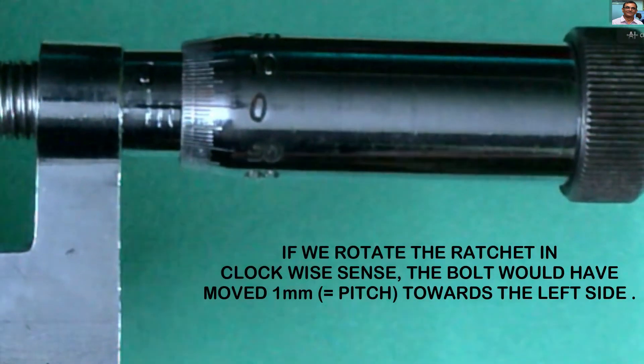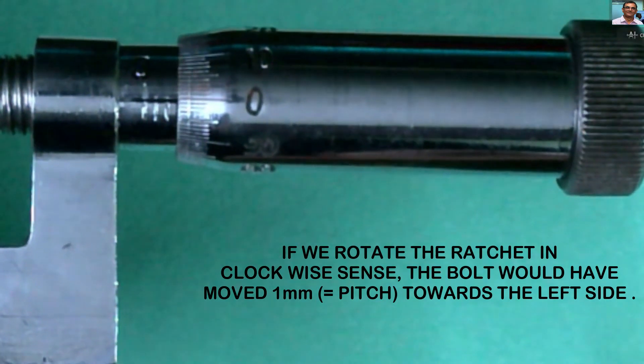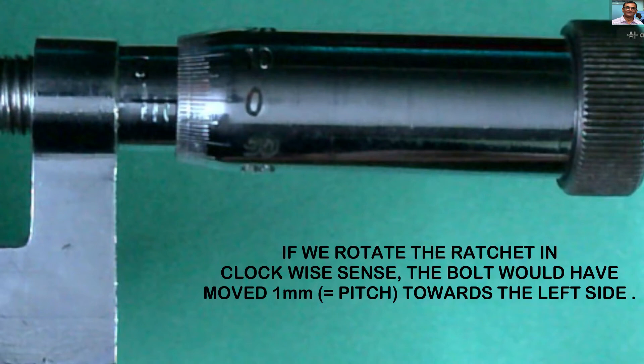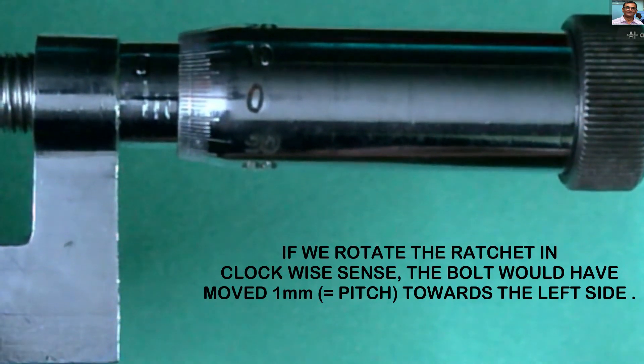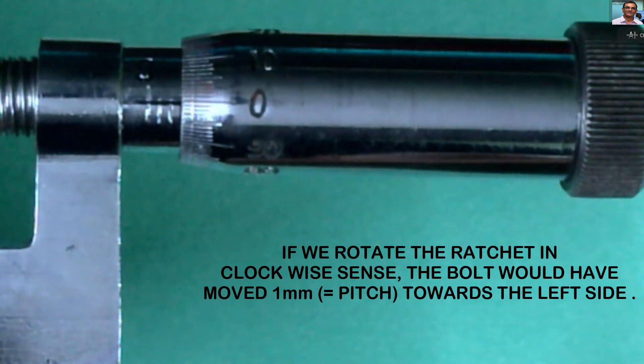It means that during one full rotation of the circular scale, the bolt has moved on the main scale by exactly one millimeter. So this one millimeter is the pitch of the screw gauge.